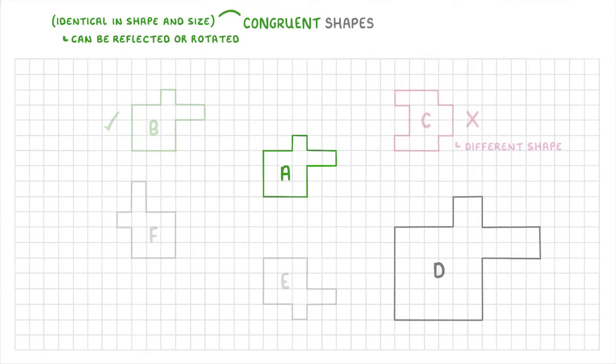Then looking at D, even though this is the same shape, it isn't the same size, so this one isn't congruent either.